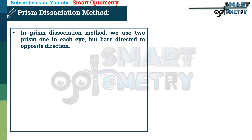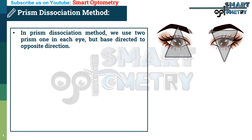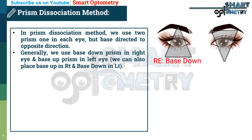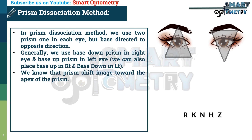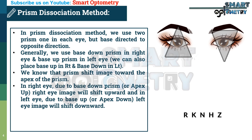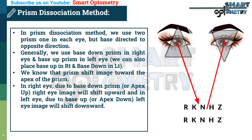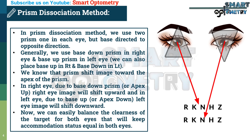In the prism dissociation method, we use two prisms, one in each eye, but with the base directed in opposite directions. Generally, we use base-down in the right eye and base-up in the left eye. Since a prism shifts the image towards its apex, the right eye image shifts upward due to the base-down prism, and the left eye image shifts downward due to the base-up prism. This isolates the target of each eye — one on top of the other — so we can easily balance the clarity of both targets and keep accommodation status equal in both eyes.